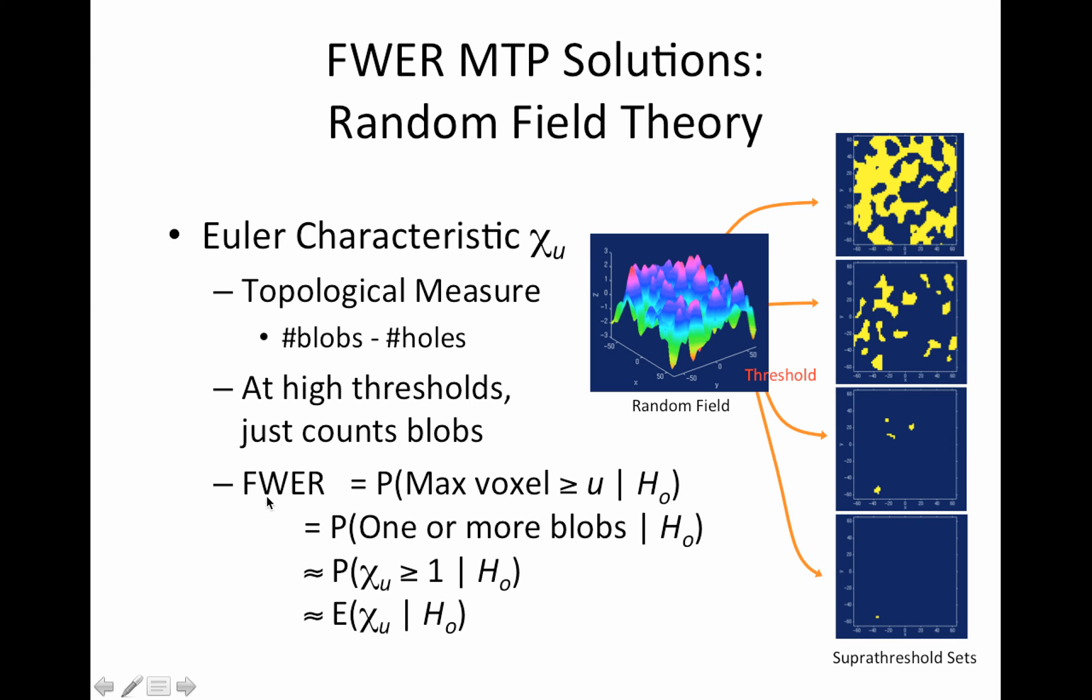So just what I had in the previous slide, the family-wise error rate is the probability that our max voxel exceeds some threshold under the null hypothesis, which is the same. If the max is above the threshold, then we must have one or more blob, right? The blob may only have one voxel, but probably has more or could have more.